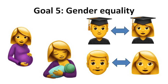Fourth, increasing value of unpaid care and promoting shared domestic responsibility. Fifth, ensuring full participation of women in leadership and decision-making roles. And sixth, ensuring access to universal reproductive rights and health. The three means of achieving targets are fostering equal rights to economic resources, property ownership and financial services for women, promoting empowerment of women through technology, and adopting and strengthening policies and enforcing legislation for gender equality.